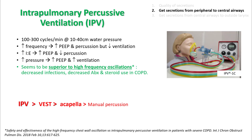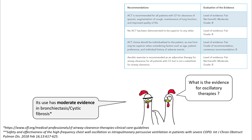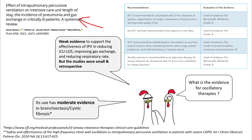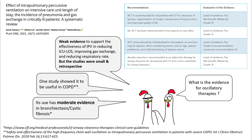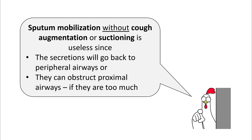In oscillatory therapies, IPV is possibly better than VEST, which is possibly better than Acapella. There is moderate evidence in bronchiectasis and cystic fibrosis for using oscillatory therapies. However, the evidence in the ICU is pretty weak because studies have been small and retrospective. But to clarify, this does not mean oscillatory therapies are not useful in the ICU — there is some benefit of using IPV in COPD patients.